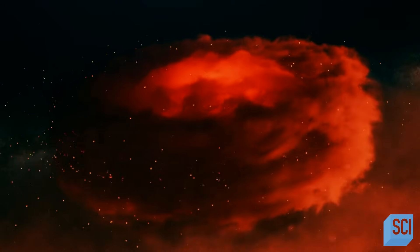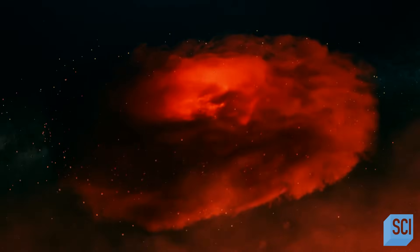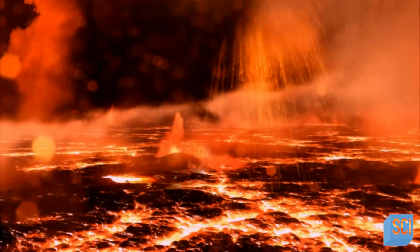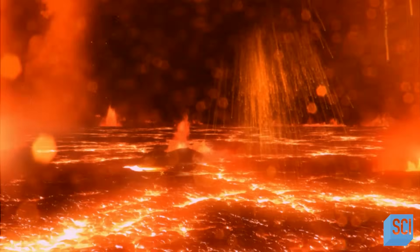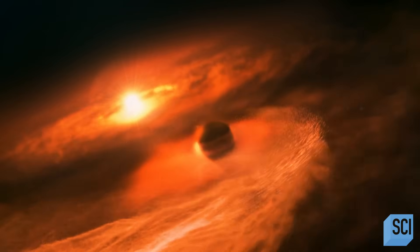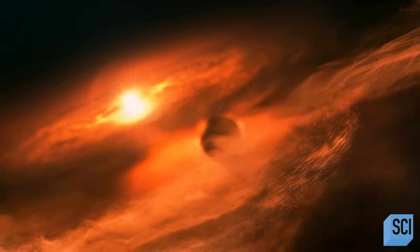Gradually, the synestia cooled and the donut-shaped cloud shrank. Rock vapor condensed into a liquid, then solid rock. Earth began to reform. And it didn't recondense into a single more massive Earth. Instead, there was enough material at the fringes of this blob to condense into its own object, which became the moon.